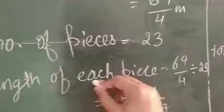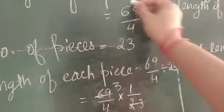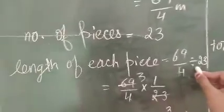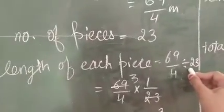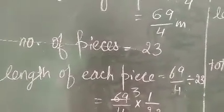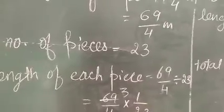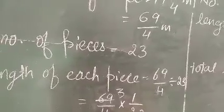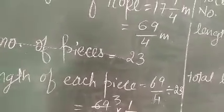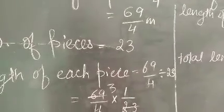Length of each piece is equal to total length divided by number of pieces. That means 69/4 divided by 23.